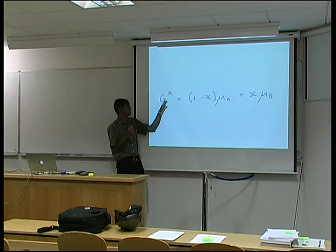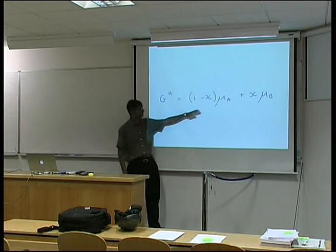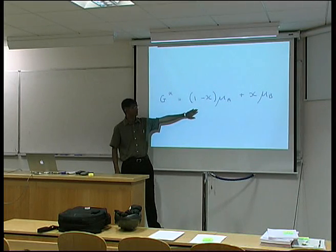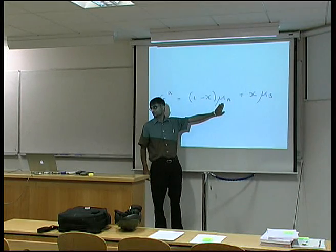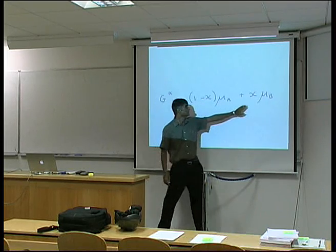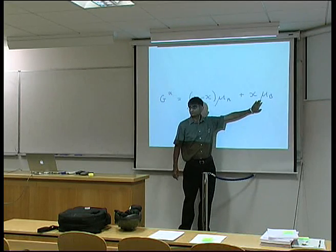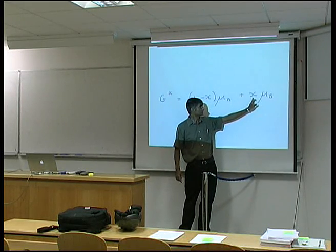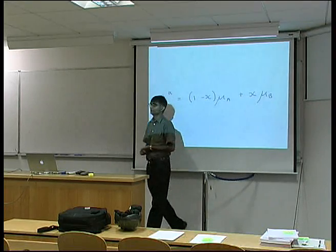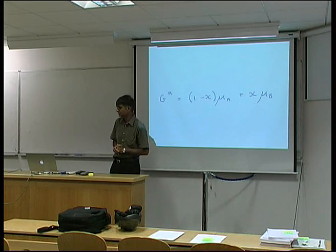Just to remind you, this is the free energy of a solution which is a mixture of A and B. This is the contribution to that free energy due to the A atoms, where this is the chemical potential of a mole of A atoms. And this is the contribution to the free energy of the B atoms - the mole fraction of B times the chemical potential gives the contribution of B atoms in that particular solution.